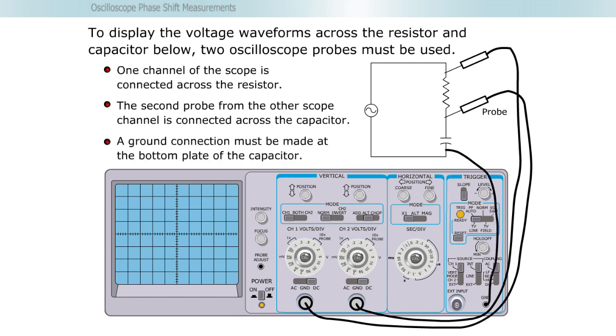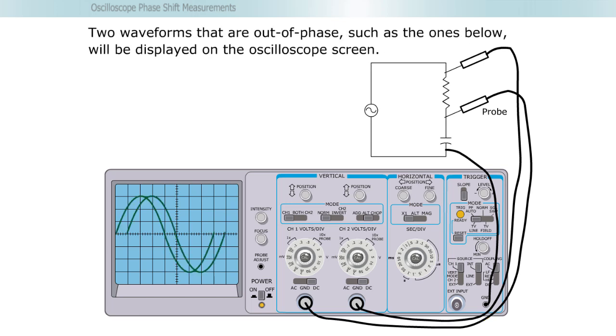A ground connection must be made at the bottom plate of the capacitor. Two waveforms that are out of phase, such as the ones below, will be displayed on the oscilloscope screen.